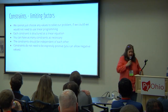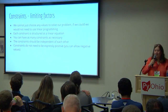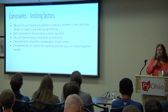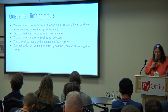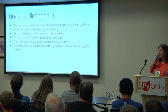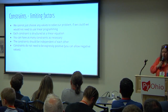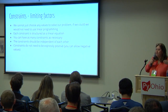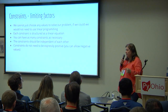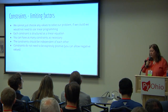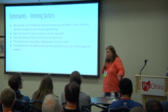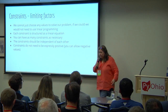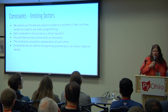Some information about constraints: we cannot just choose any values we want to solve our problems — if we could, we wouldn't need linear programming. These constraints have to be pragmatic and related to your target optimization. Each constraint will be structured as a linear equation, and you can have as many as needed. They should be independent of each other, but one can reference the bound of a prior one — like greater than or equal to for one constraint and less than for another.